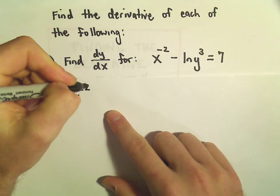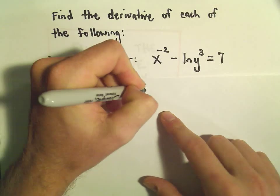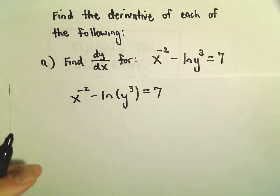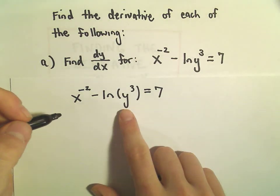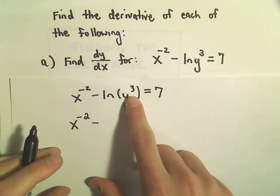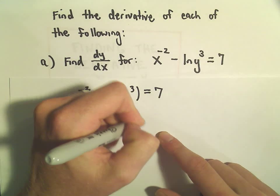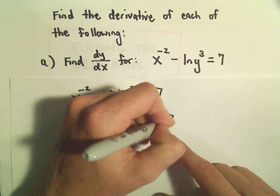I'm just going to rewrite it down here one time. I think one thing I'm actually going to do first, in order just to make the derivative a little bit easier, I'm going to use these properties of logarithms to bring the exponent out front. We can write this as 3 times the natural logarithm of y equals 7.